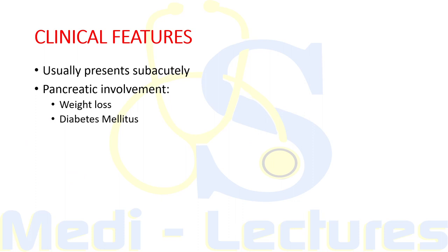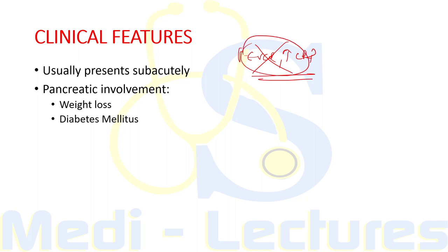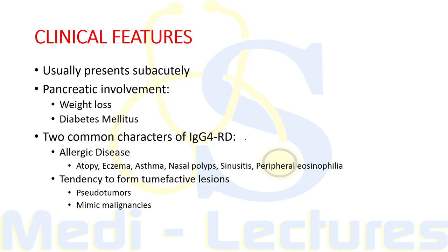The clinical features are very varied. Usually the disease presents subacutely, and even in the setting of multi-organ disease, most patients do not have fever or high elevation of CRP. With pancreatic involvement, weight loss can occur due to exocrine pancreas involvement, and patients can develop diabetes mellitus due to endocrine pancreas involvement. Two common characteristics are first, allergic disease, and second, the tendency to form tumefactive lesions.